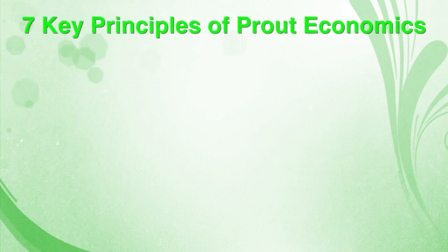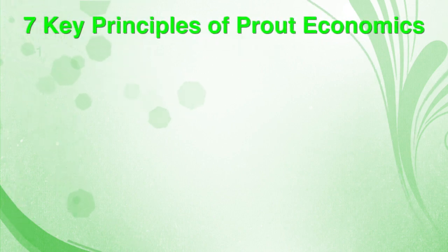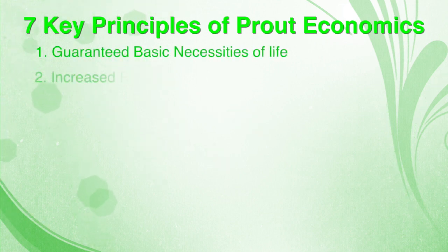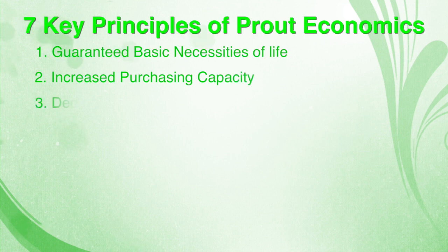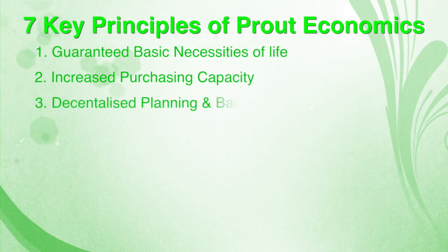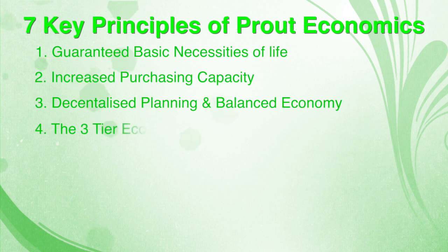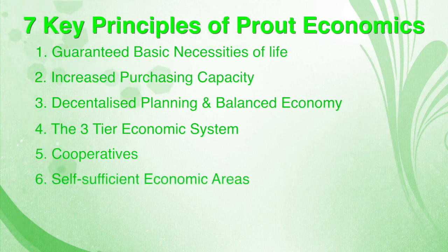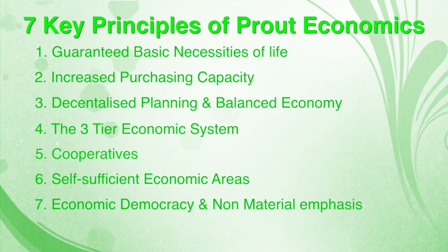In this video, you'll be introduced to seven key economic principles of Prout: guaranteed minimum requirements of life, increased purchasing capacity, decentralized planning and balanced economy, the three-tier economic system, cooperatives, self-sufficient economic areas, and economic democracy and non-material emphasis.